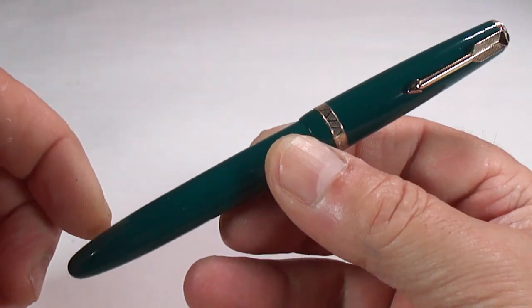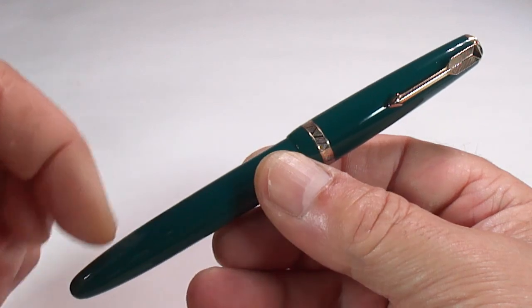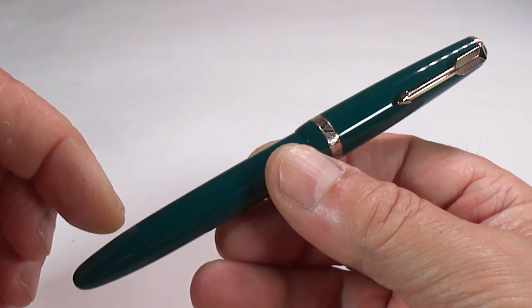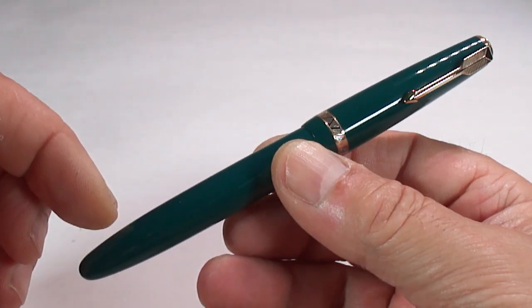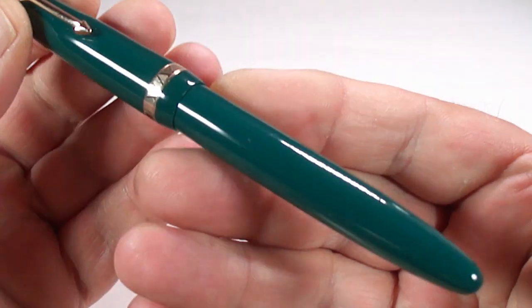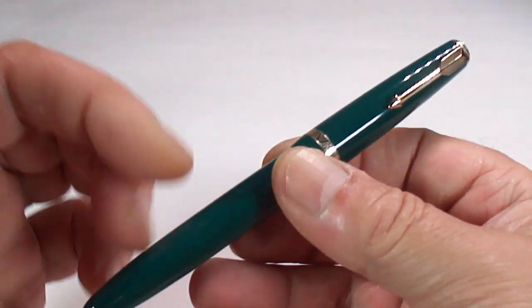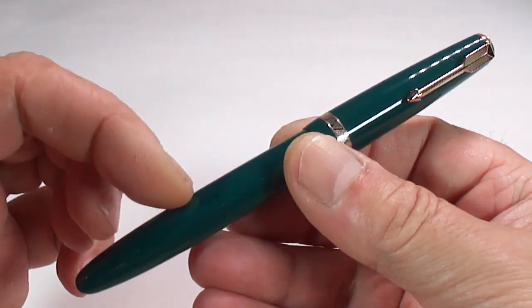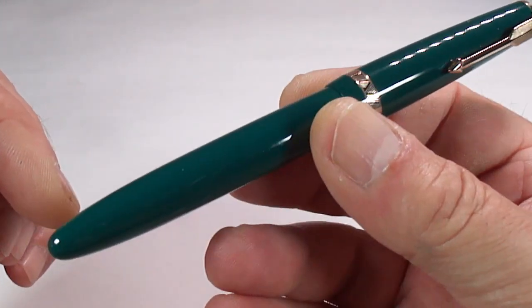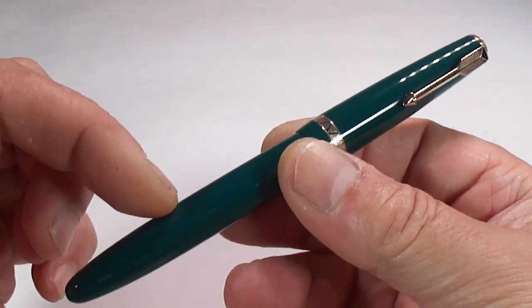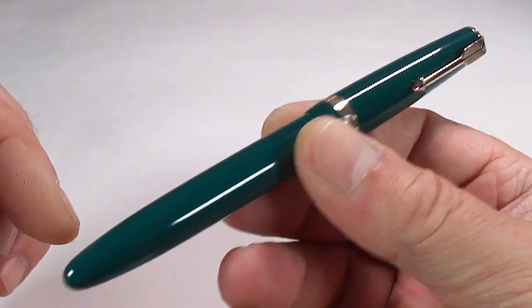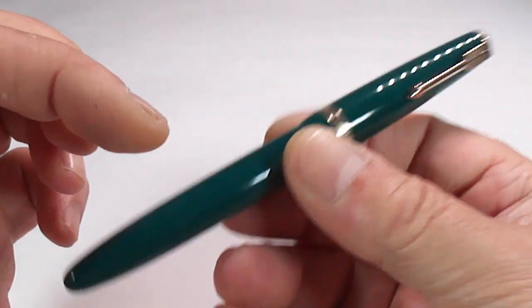Now the Parker Duofold Senior, this is what they term as the new Duofold. It was made for the European market. They also brought them out in black, red, blue, and this gorgeous green color. The new style or new Duofolds were brought out around 1953, although this one is from 1954 through to 1958.